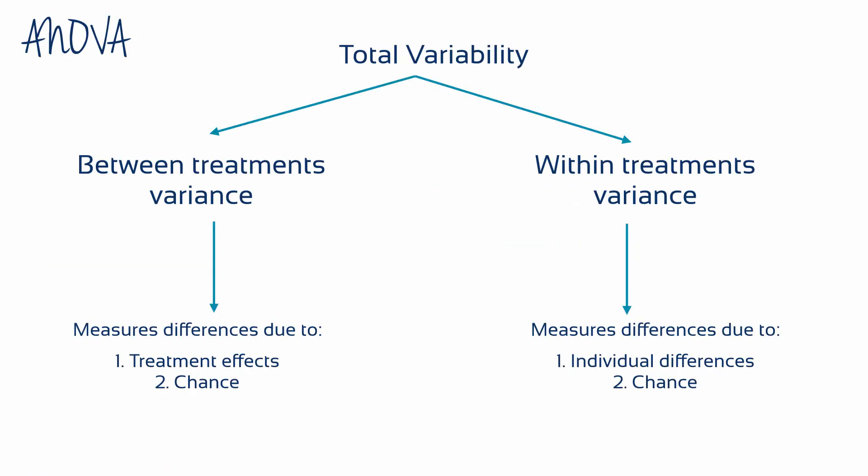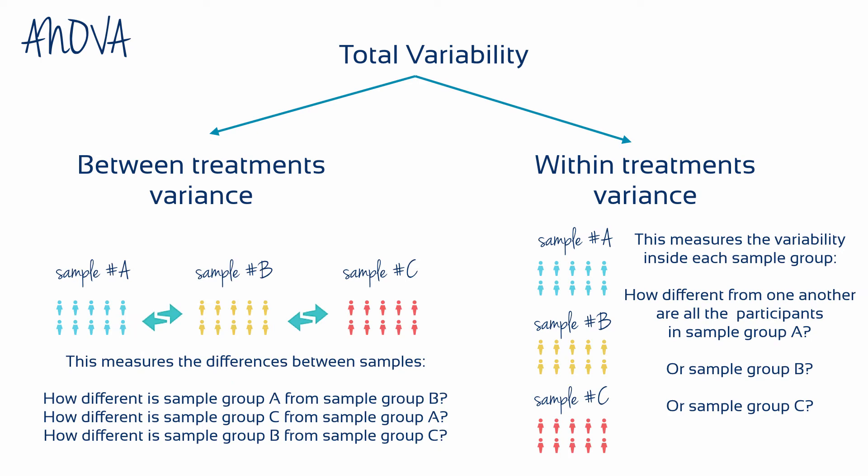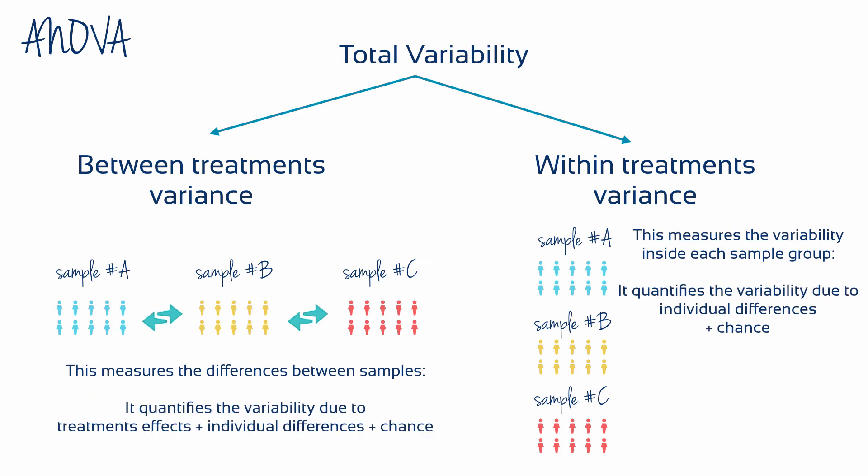ANOVA stands for analysis of variance, and the term 'analysis' in statistics means the breakdown. ANOVA breaks down or analyzes data in the following way: it takes the total variability of a data set and separates out and quantifies the between-treatments and within-treatments variance. Analysis of between-treatments variance starts by quantifying how different samples A, B, and C are from one another, whereas the analysis of the within-treatments variance starts by quantifying how different individuals within a given sample group are from one another.